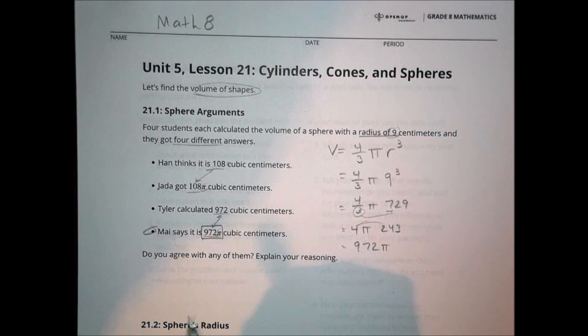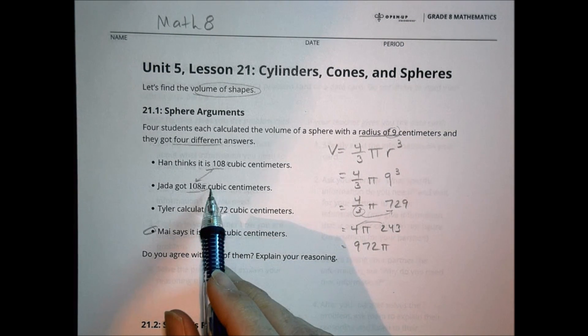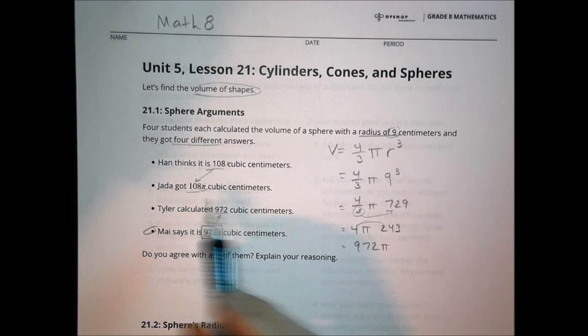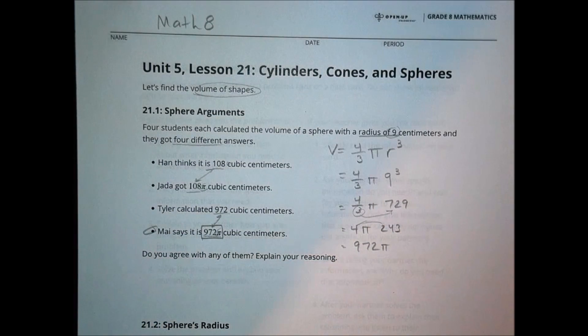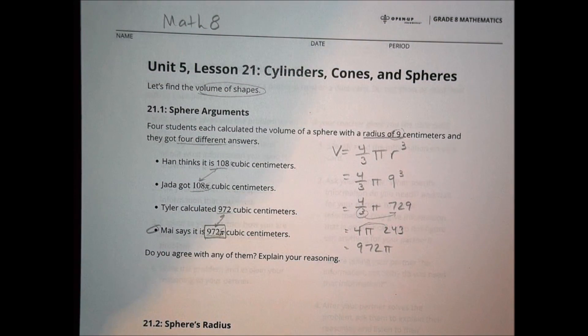Tyler forgot to include the pi, which is what's wrong there. And this guy over here, not sure how they got 108, maybe they just squared it. That's a possibility. I have to do the math to figure out how they got that one there. That's probably a good guess. I probably just squared it instead of doing it times 3, or 3 times to the third power.